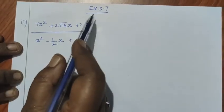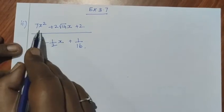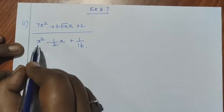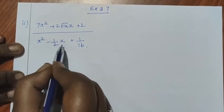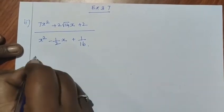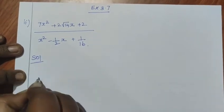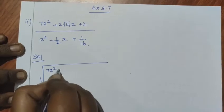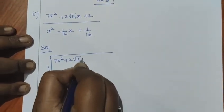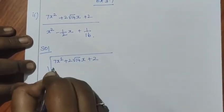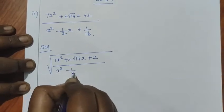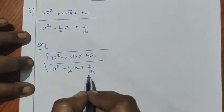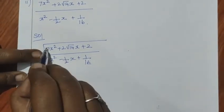Exercise 3.7, second sum: square root of 7x squared plus 2 root 14 x plus 2, divided by x squared minus 1 by 2 x plus 1 by 16. We need to find the square root, so we look at both as quadratic expressions to factor.